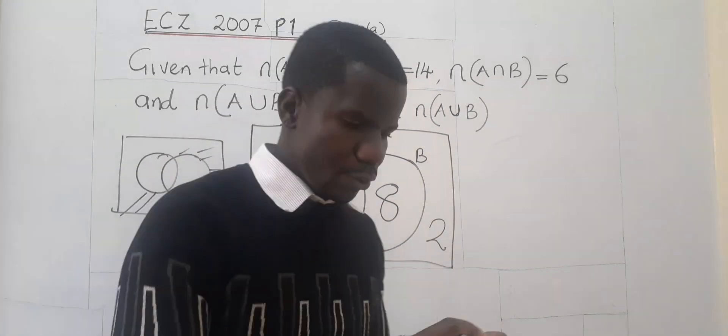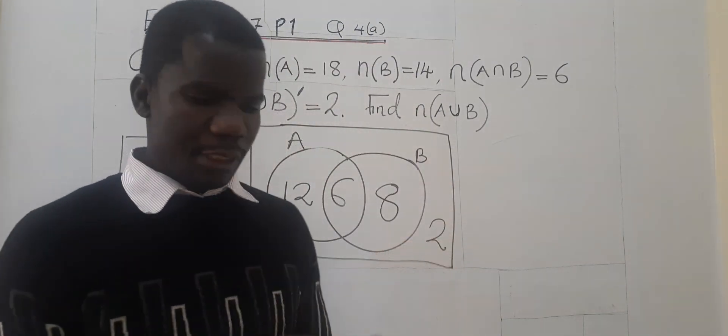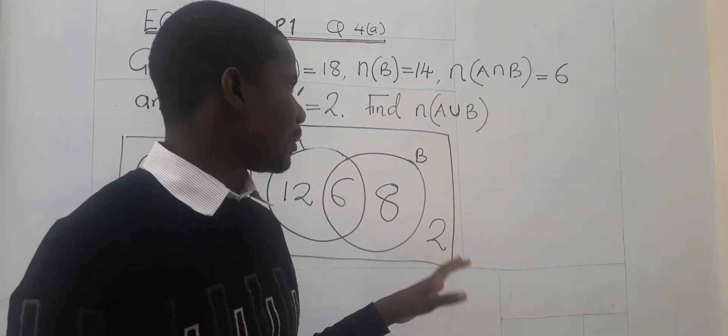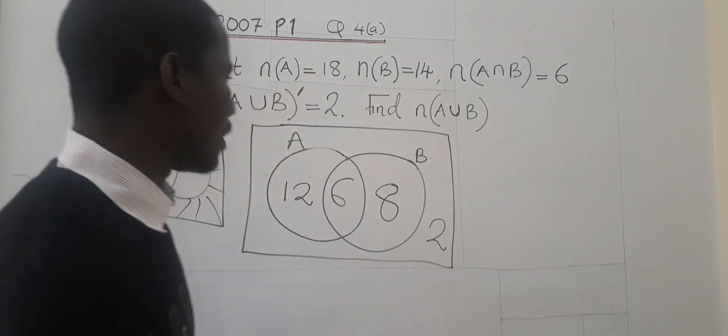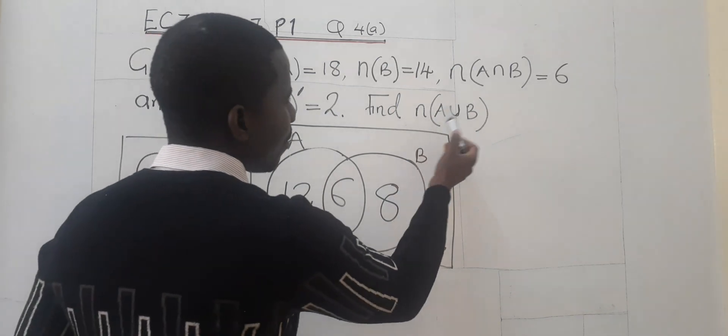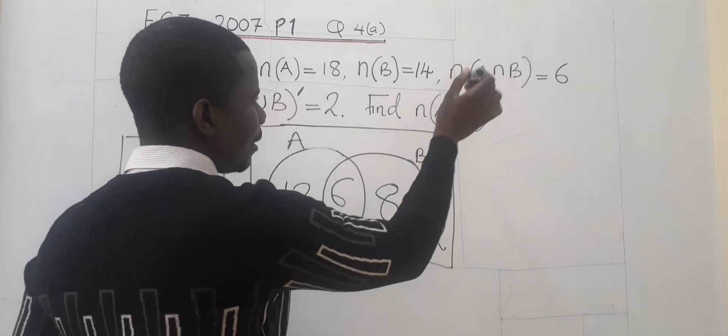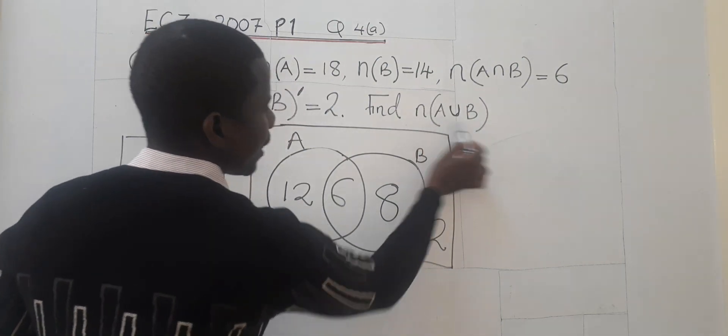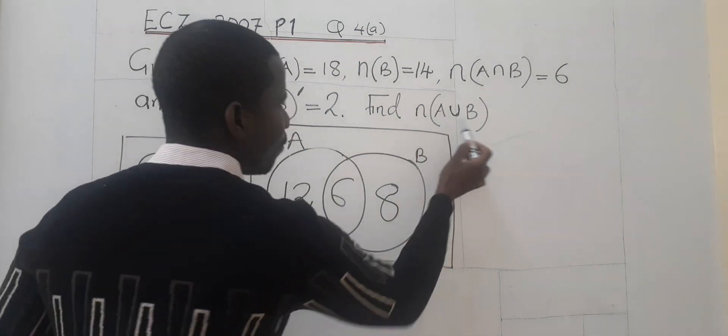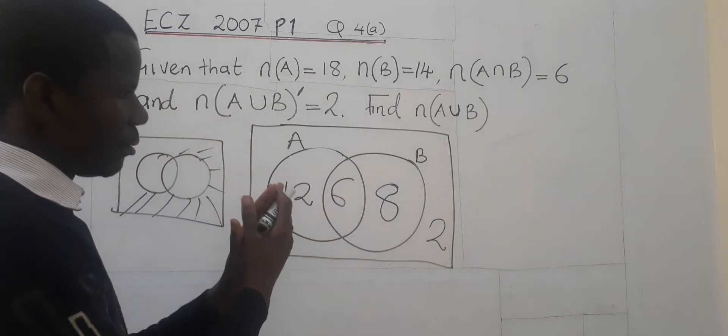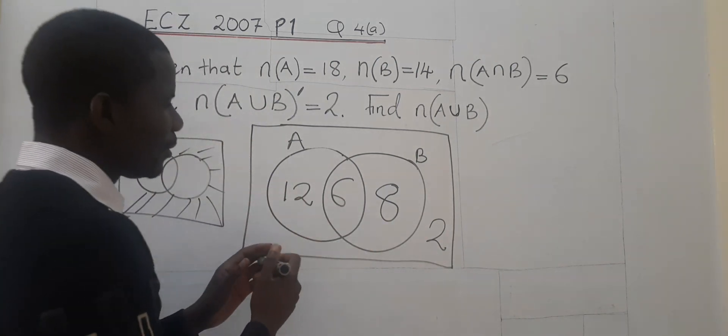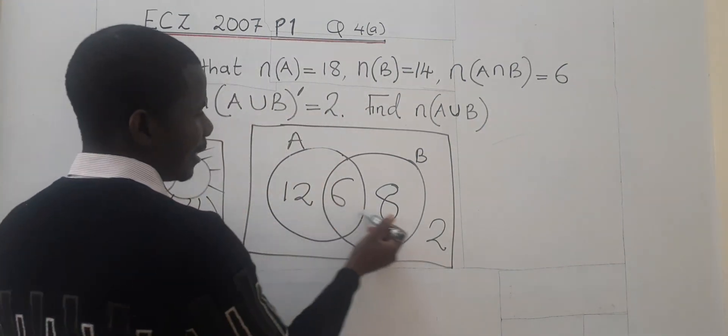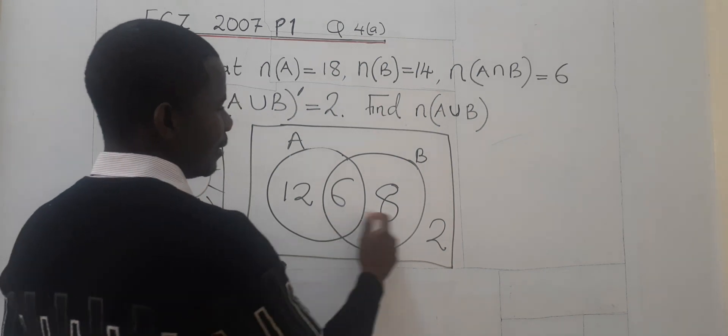So if we are to answer our question using a Venn diagram, this is what we are going to get. Now the question is asking us to say, how many elements are in the union of A or B? The union here, the union of A and B. We have to look at all the elements that are found in A and B. So it is these elements here.